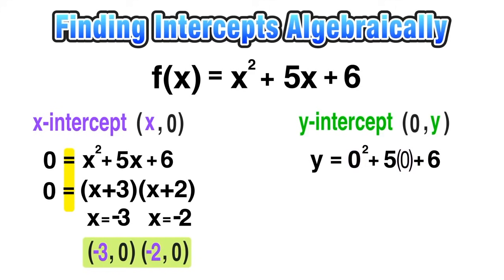So zero squared is just equal to zero. Five times zero is zero, and we just bring down that plus six. Now zero plus zero plus six evaluates to just six.